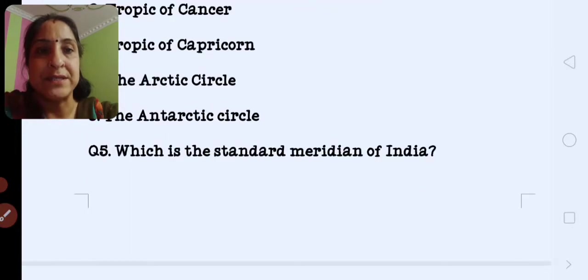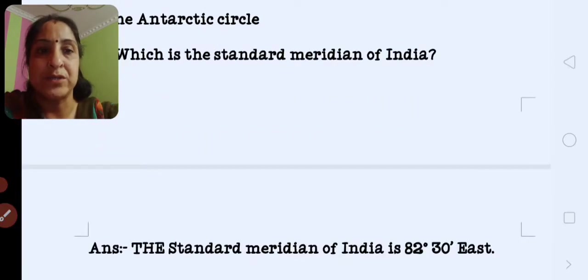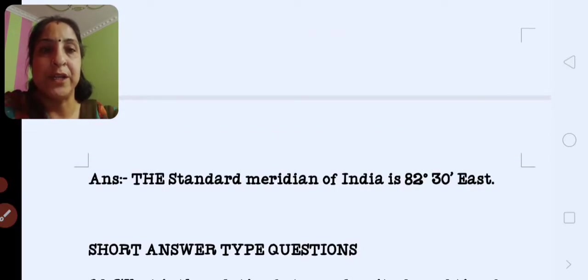Which is the standard meridian of India? The standard meridian of India is 82 degree 30 minutes east.